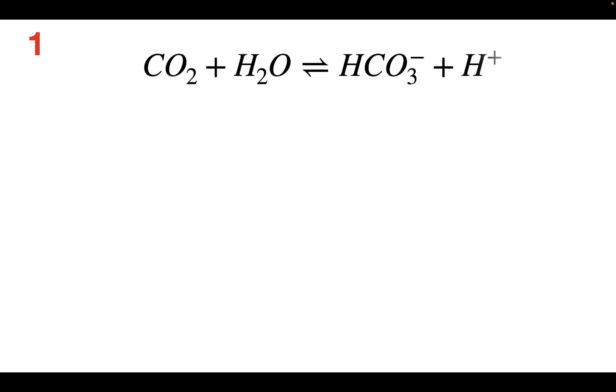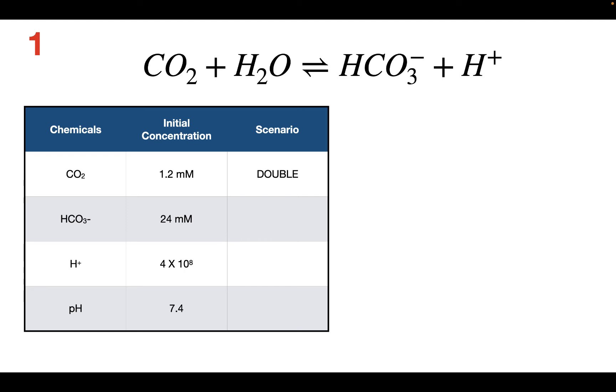This is the chemical equation for the bicarbonate buffer system. We're going to start off with the initial concentrations here of these different things. We start off with a pH of 7.4, and these concentrations here are all in millimolar. In scenario number one, we're going to see how the pH is going to change when we double the amount of CO2 inside the solution.